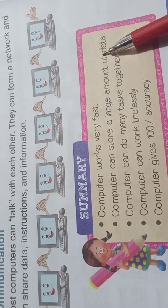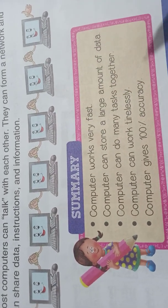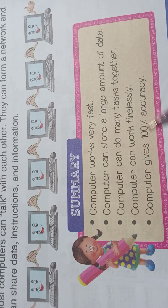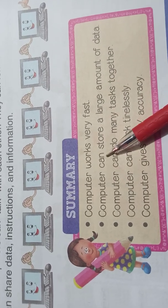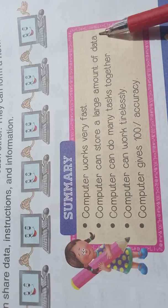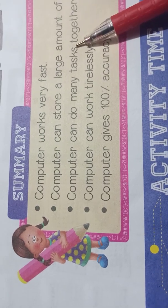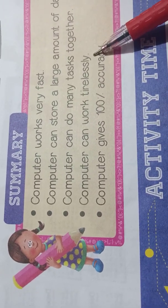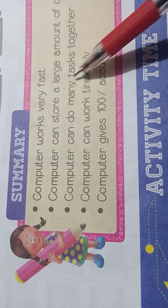Now in this chapter we will learn these features on page number 34. Computer works very fast. A computer can store a large amount of data. A computer can do many tasks together. A computer can work tirelessly. A computer gives 100% accuracy. We have already learned this.